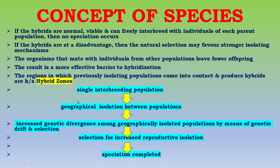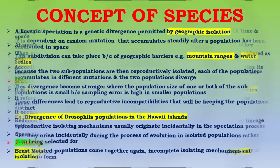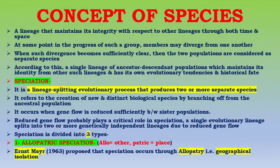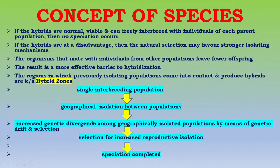In allopatric speciation, a single interbreeding population is geographically isolated, resulting in increased genetic divergence among the geographically isolated populations by means of genetic drift and selection. This is followed by selection for increased reproductive isolation, and finally speciation is completed.